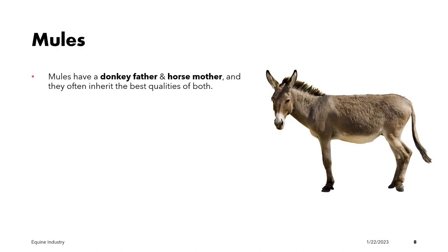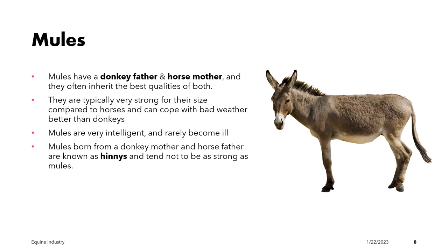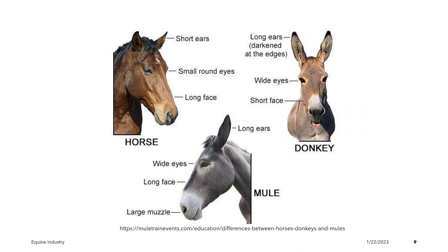Mules have a donkey father and a horse mother, and they often inherit the best qualities of both. They are typically very strong for their size compared to horses and can cope with bad weather better than donkeys. These are the major differences between the characteristic features of the head parts of the horse, donkey, and mule — the main types of equine species.